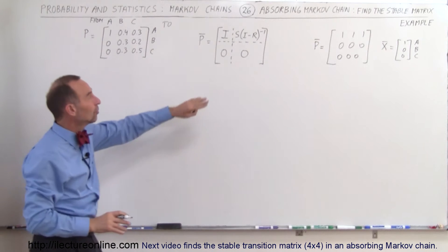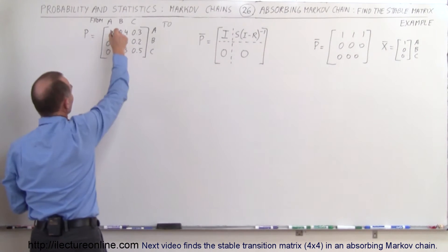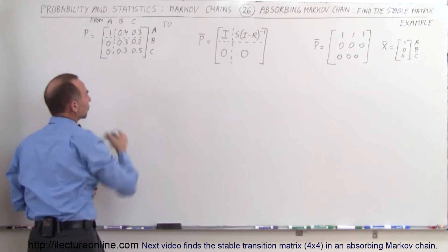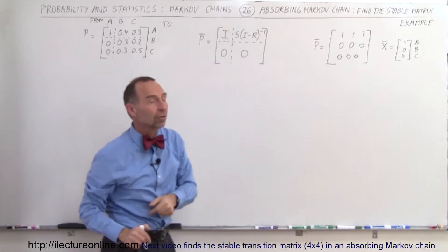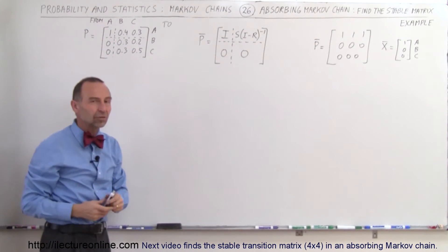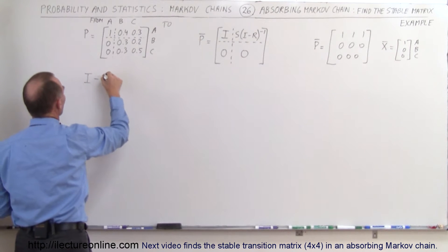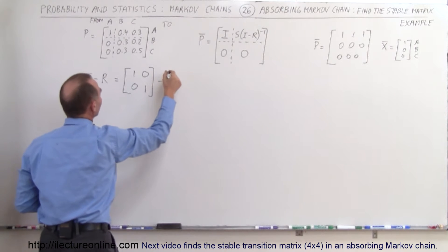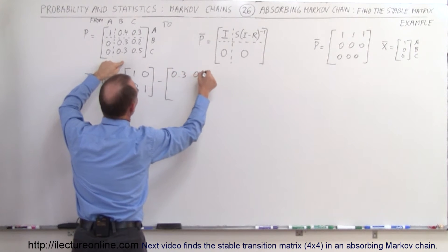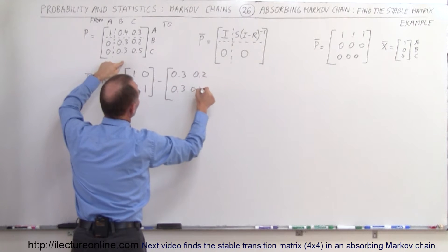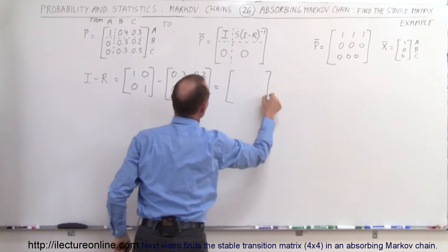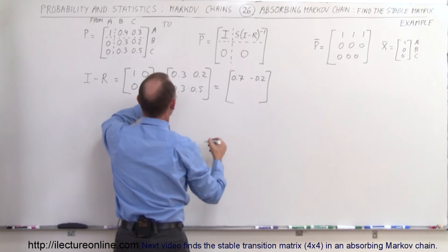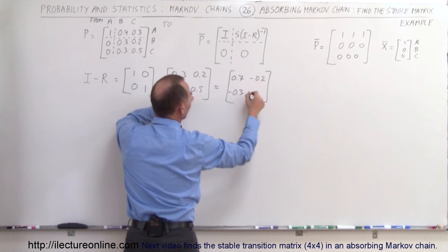Let's find it using this technique. We divide the matrix into four regions: the identity matrix I, the zero matrix, the S matrix, and the R matrix. The first thing we want to do is subtract the R matrix from the identity matrix. Since R is 2×2, we make I a 2×2 as well. So I minus R becomes the identity matrix minus R, which is [0.3, 0.2; 0.3, 0.5], giving us [0.7, -0.2; -0.3, 0.5].